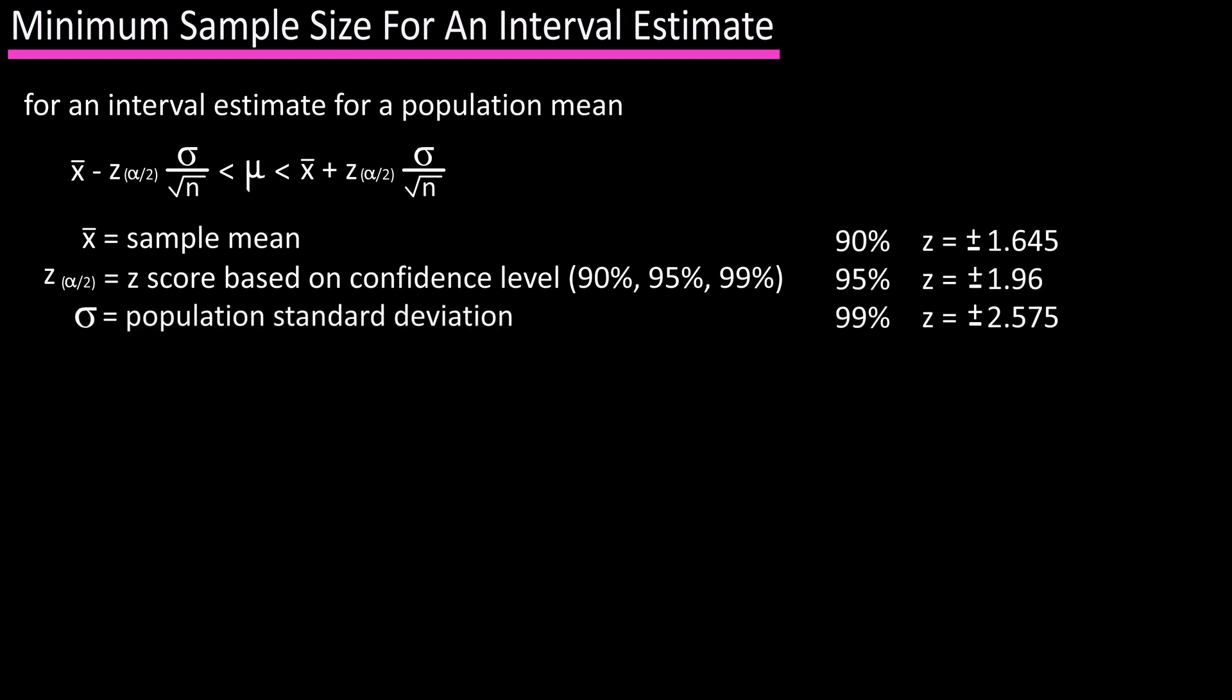Sigma is the population standard deviation, and n is the size of the sample the mean was calculated from. This z(α/2) times σ over √n is also called the margin of error, which we will call E.